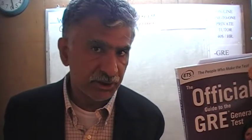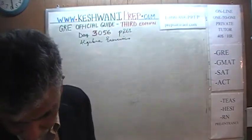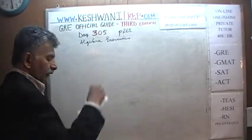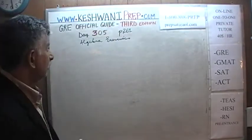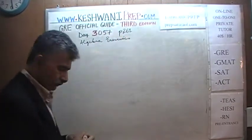We are here because we want to prepare for the GRE. We have been solving math problems out of this book, the official guide to the GRE, third edition. If you do not own this book already, purchase one immediately — you are going to need it. Today is lesson number 57 and we are on page number 261. Please turn to it.